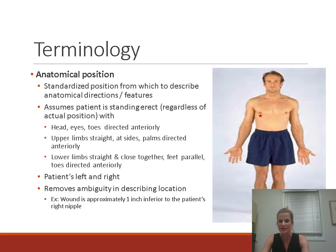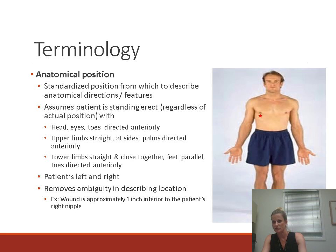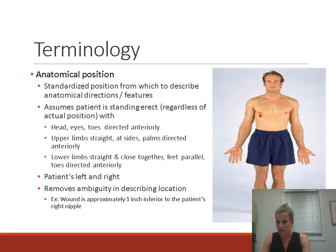Using anatomical terminology makes it easy to describe a point of interest on the patient. For example, if there's a star representing a stab wound, how do you describe its location? First, is it left or right? That is the patient's right. It's just below the nipple, but instead of 'below' we use anatomical terminology — inferior. So it is about one inch inferior to the right nipple.